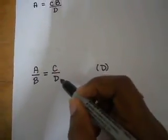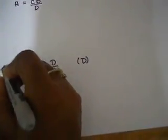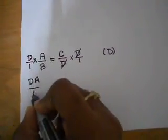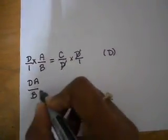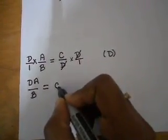Now we still have something in the denominator, so we try to multiply to get rid of it. This is basically going to be C over 1, and we do the same to the other side — D over 1. These cancel out, and we're left with DA over B, which is equal to C. But we still want to isolate D.